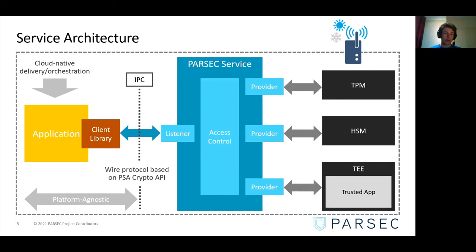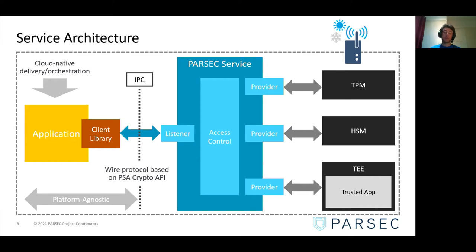On the other side of the IPC, there is the cloud-native application, which uses the Parsec client library to be totally platform-agnostic. That will work on any platform. Anywhere that this application is deployed, anywhere that there is a Parsec service, it will work and will not need to be reconfigured. Previously, if an application wanted to use a TPM or HSM, it would have to change its API calls — but with Parsec, it doesn't have to.